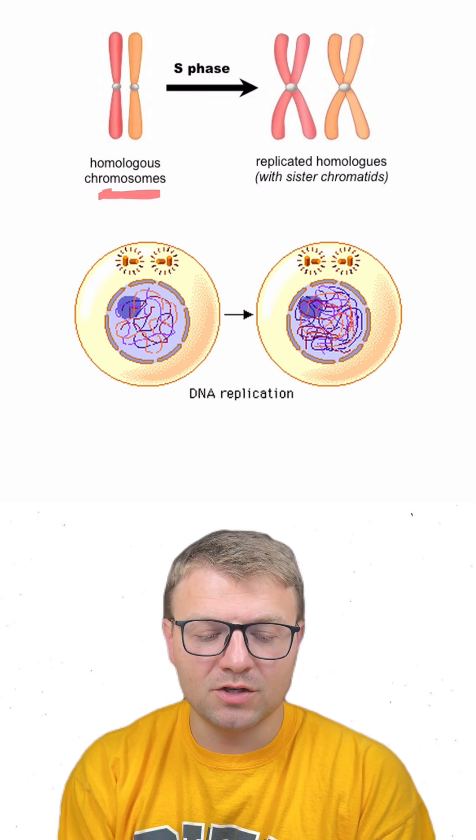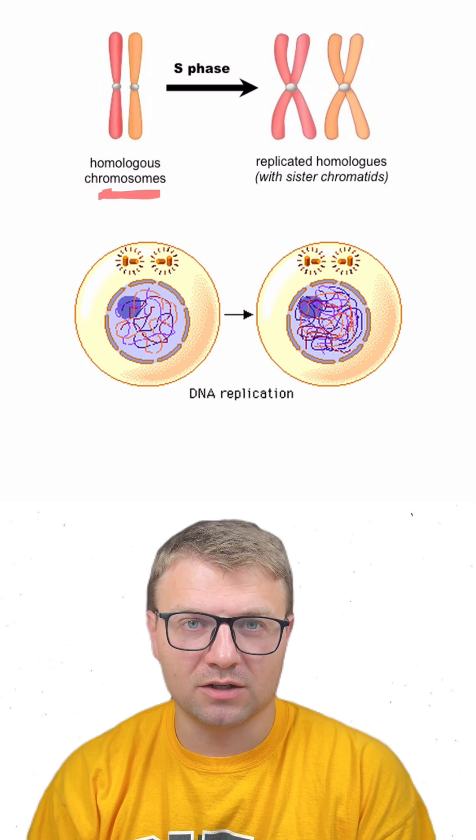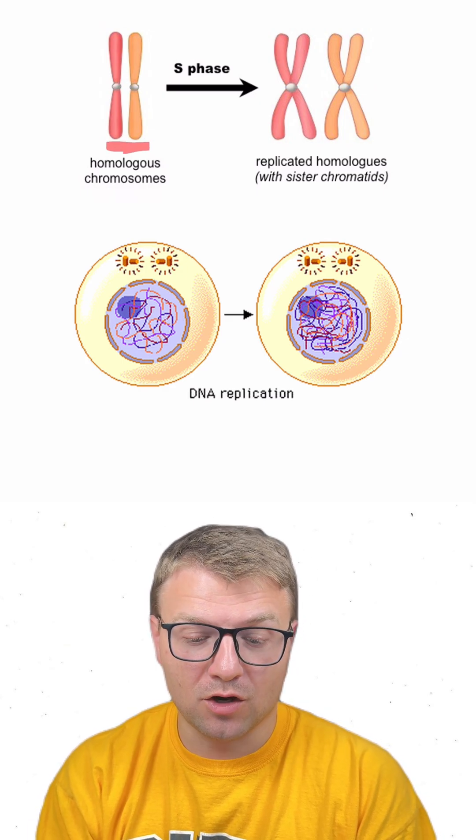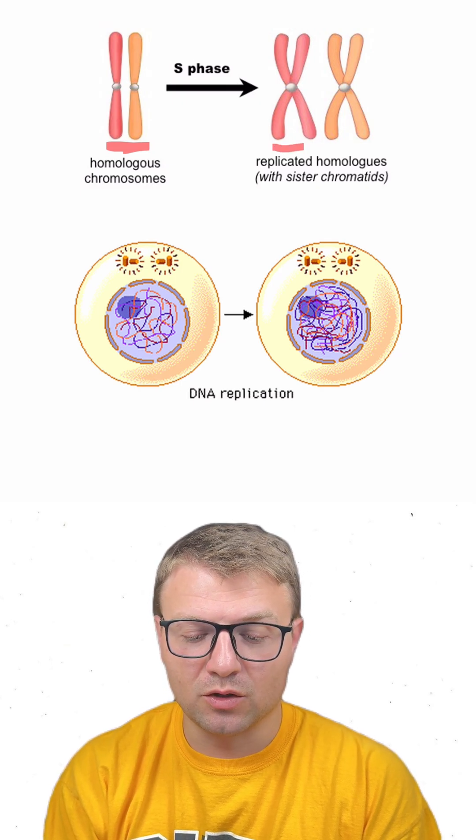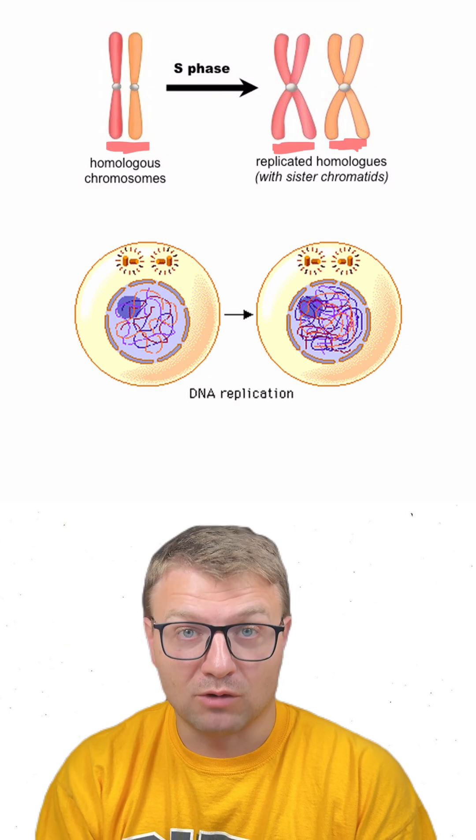Remember during S phase, the chromosomes are going to duplicate through a process known as DNA replication. This is where each chromosome is going to duplicate its chromatid, so each chromosome is going to have a sister chromatid after replication.